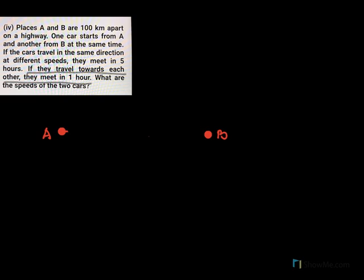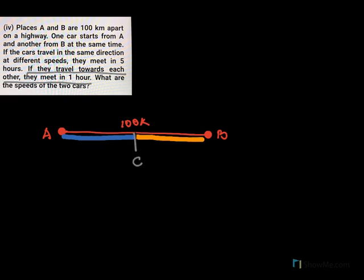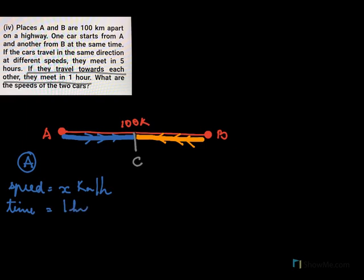For the second part, if they travel towards each other, they meet in one hour. Again we have point A and point B, 100 kilometers apart. Car A travels towards B, and car B travels towards A, and they meet at point C. The speed of car A is X kilometers per hour and when traveling towards each other they meet in one hour.